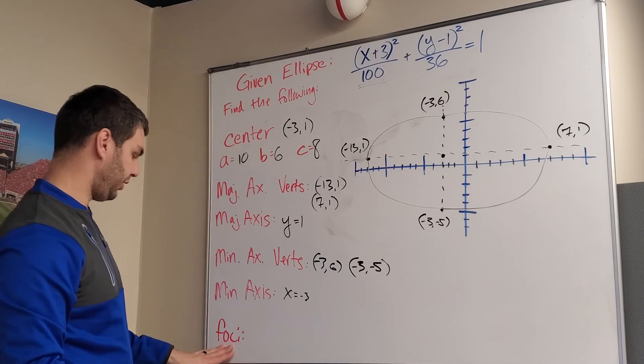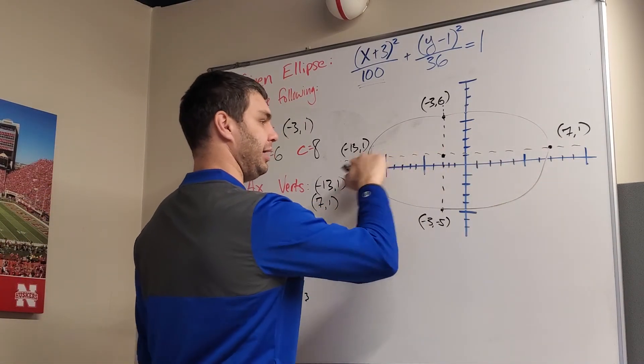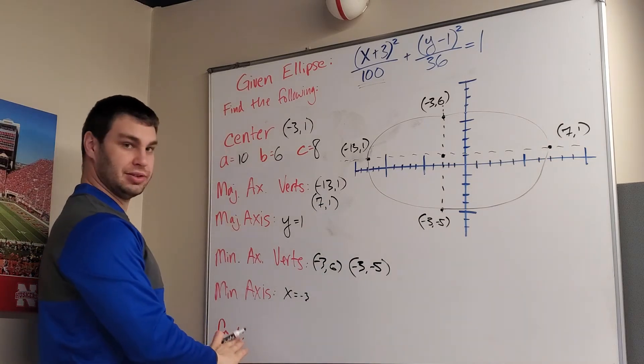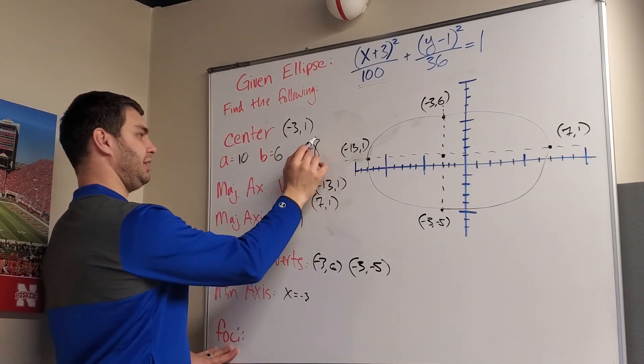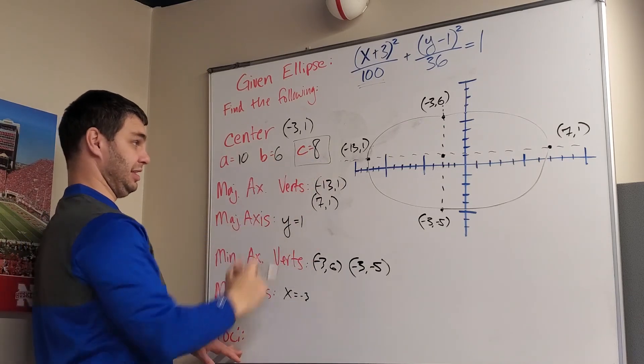The only other thing I don't have here are my foci. And my foci are going to be points on my major axes. And the reason I waited to do this is because normally, or sometimes I guess, we have our c term that's a square root. In this case, it was an integer.